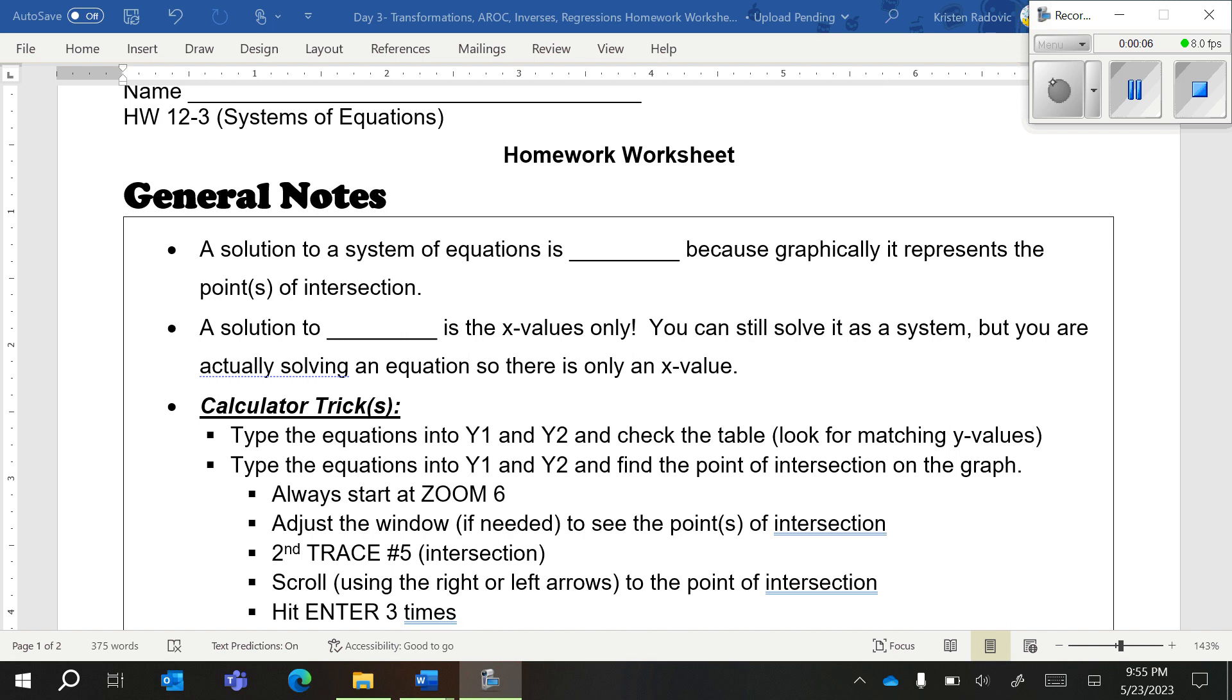In general, a system of equations is two or more equations which you're trying to solve all at the same time. A solution to a system of equations is a coordinate, so we're going to have x comma y, because graphically the solution to a system is the point of intersection. If you have no points of intersection, then your solutions are imaginary.